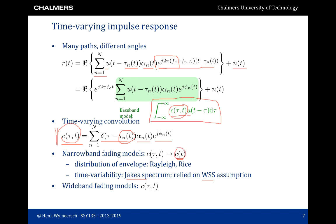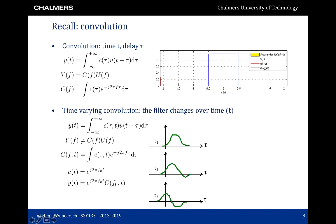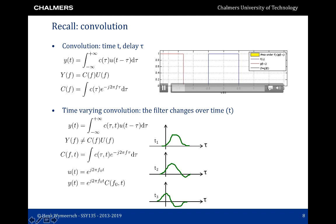In wideband fading models, we still have to use both t and τ, so there are two notions of time: delay and time. Since these two notions of time may be confusing, it is useful to go over convolution again.